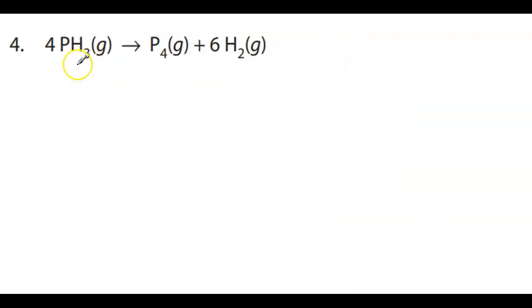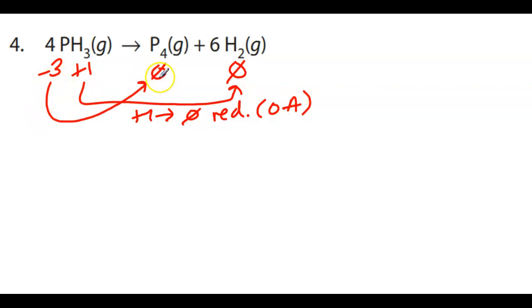Okay, number four, we have hydrogen, which is positive one. So that's plus three, phosphorus has to be negative three, and then actually both of these are zero. So phosphorus in its elemental form is P4, hydrogen is H2. So hydrogen is going from plus one to zero, which means that this is being reduced, which means it is the oxidizing agent. And phosphorus is going from negative three to zero, which means it's losing, that's oxidation, and it is the reducing agent.